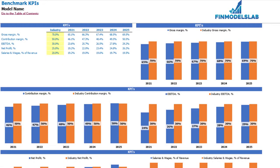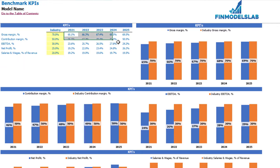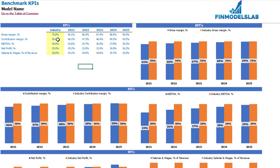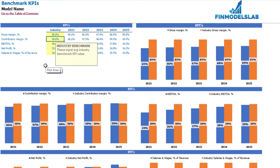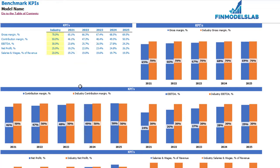On the benchmarks KPI tab you may compare your financial outputs with your industry benchmarks. There are five different benchmarks: gross margin, contribution margin, net profit, EBITDA, and salaries and wages as a percentage of revenue. The model-produced values are shown alongside yellow cells where you can input your industry benchmarks — for example, gross margin for your industry at 85%. Below you can see the same information in graphical form, with orange columns representing the industry benchmark values.